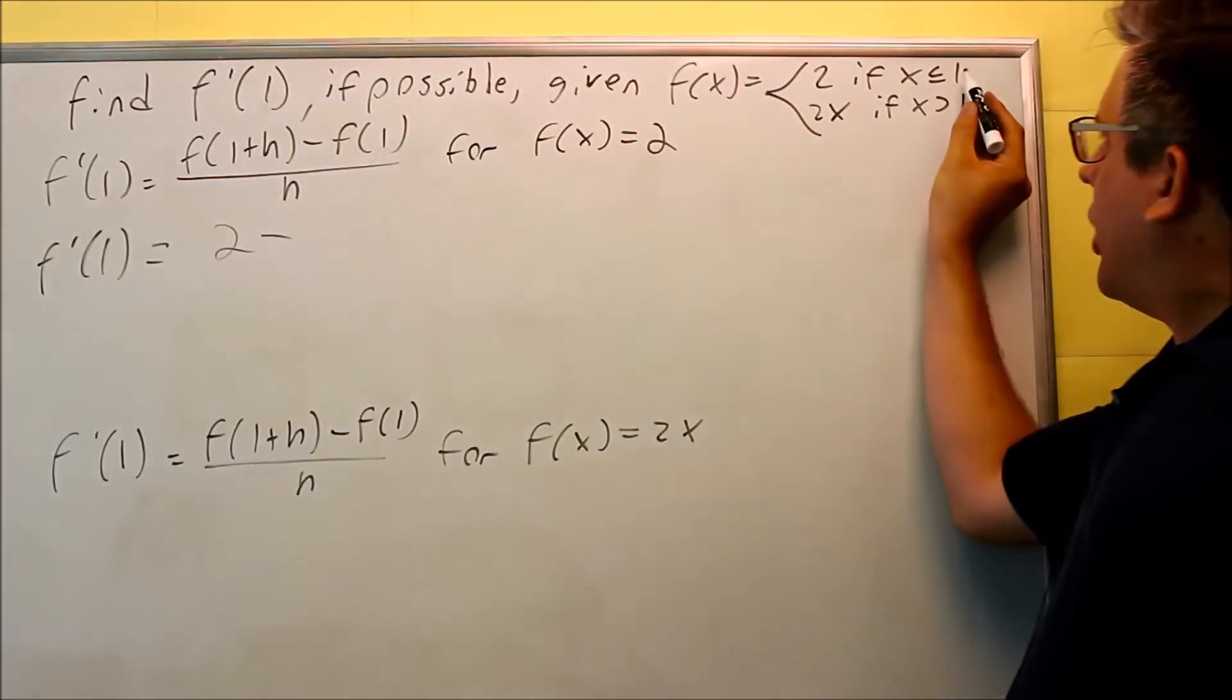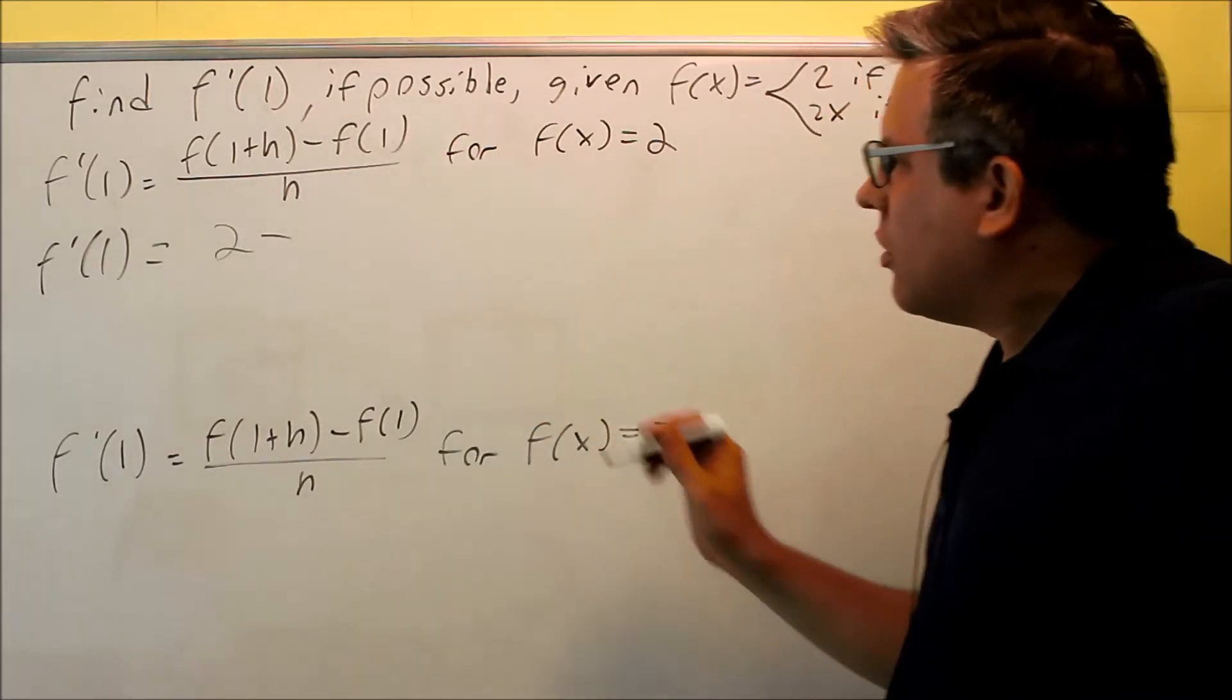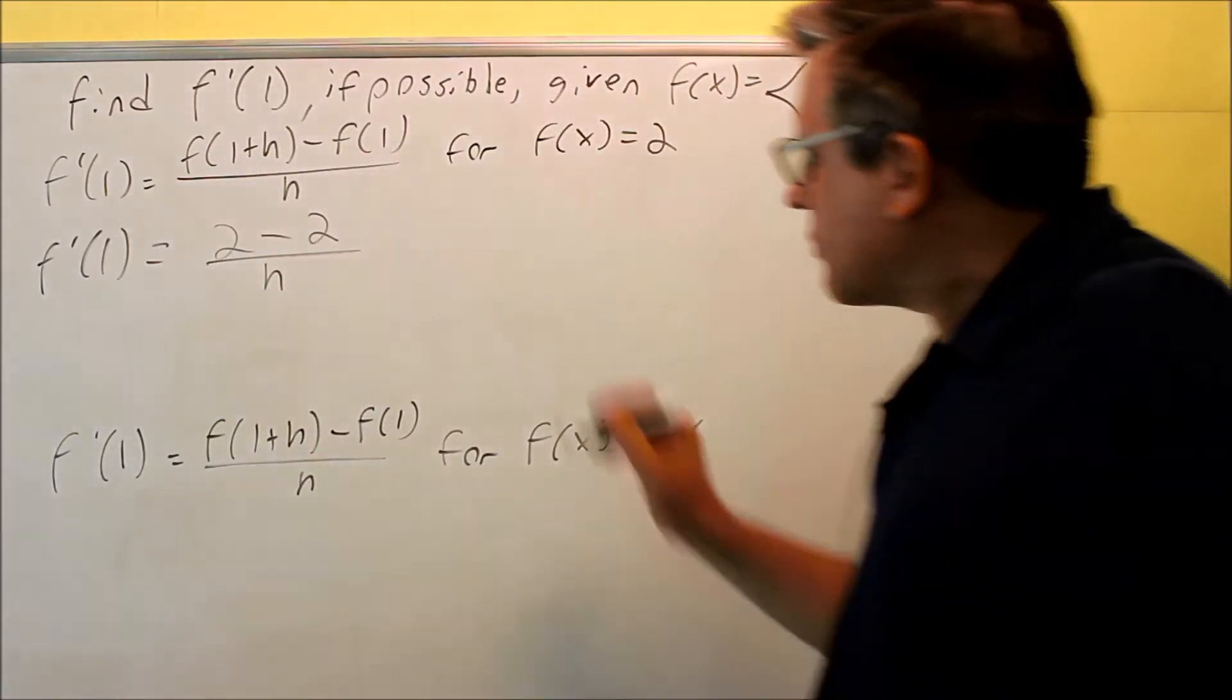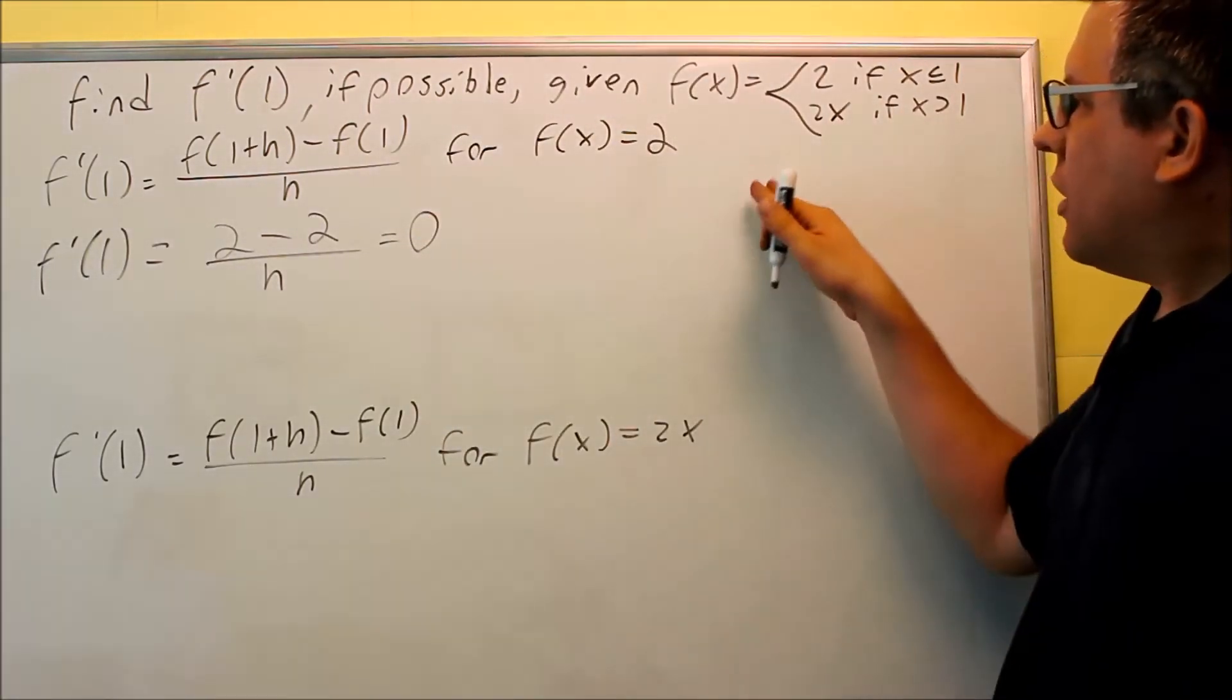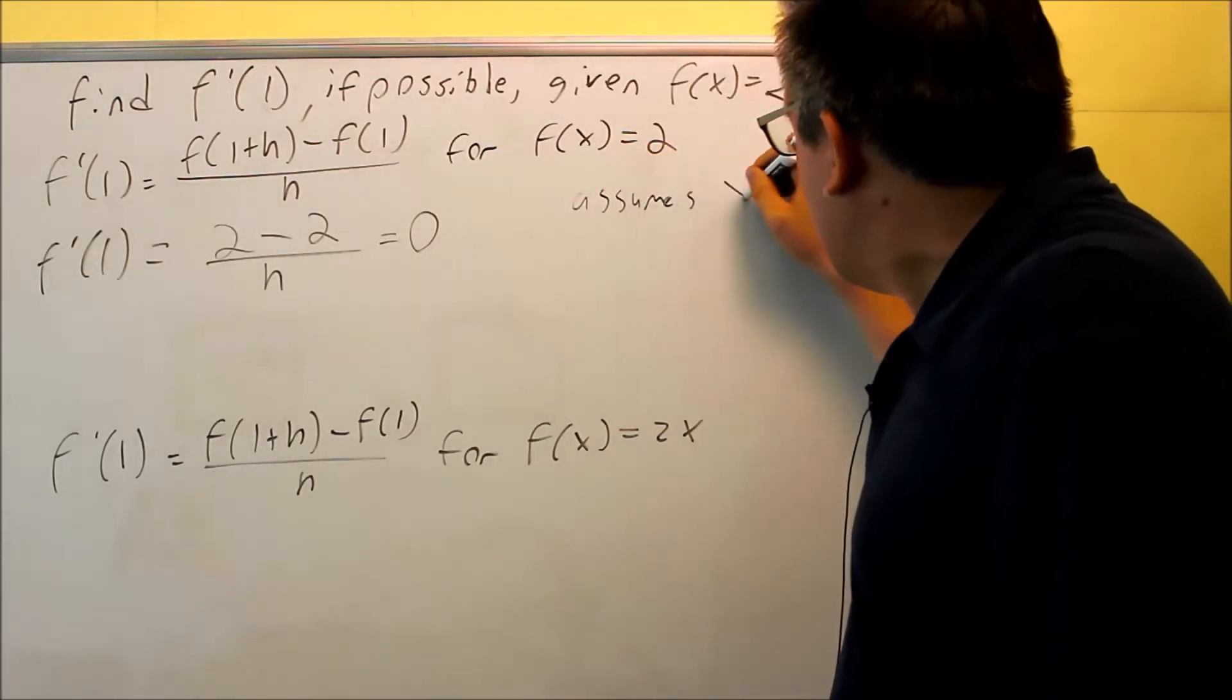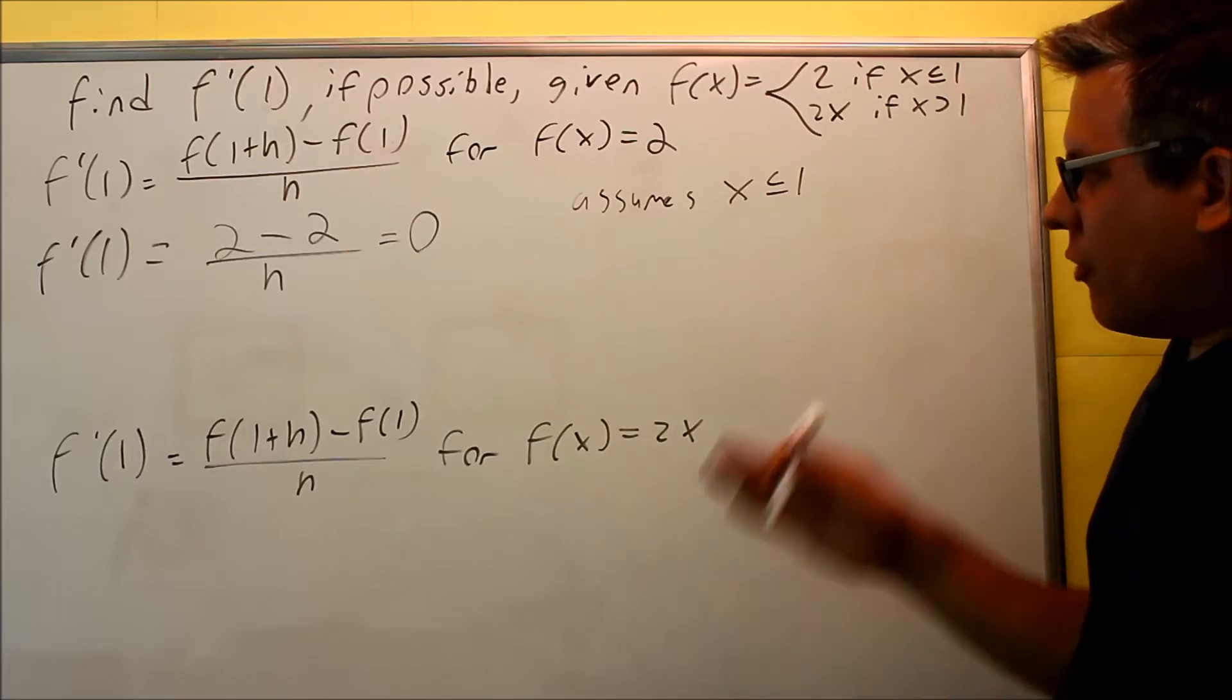When f is 1 right here, that means that I'm going to use this function, I'm going to be at 2. So f of 1 is also going to be 2, and I have h down below, and I'm going to get 0. So this first part assumes x is less than or equal to 1.